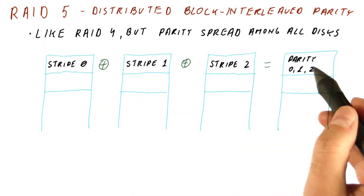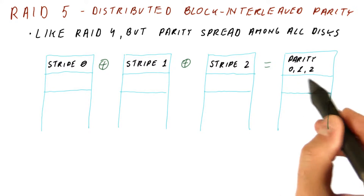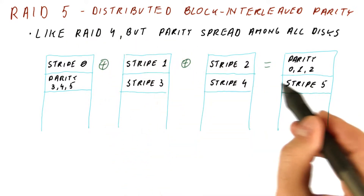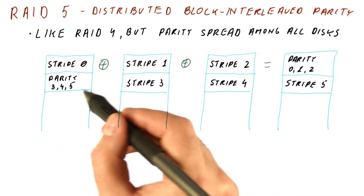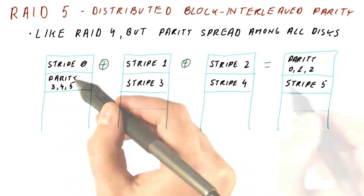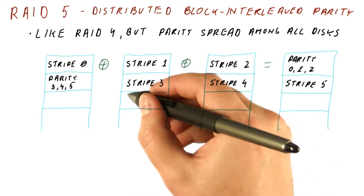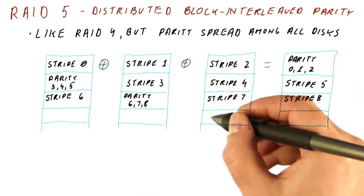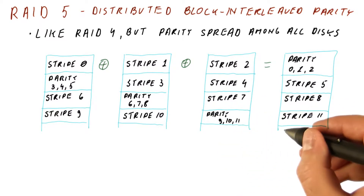In contrast, RAID 5 puts the next parity stripe not here, but on the next disk. So we get three data stripes on these disks, and their parity is here. Then for the next set of stripes, we again move the parity to another disk. And then for the next set of stripes, the parity moves again, and then the parity would again cycle back.